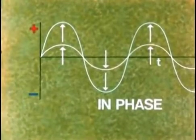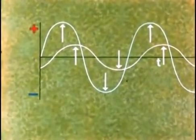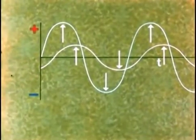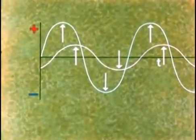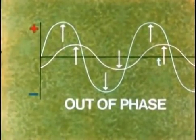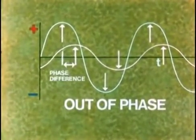Now suppose that one waveform is shifted to the right so that the zero values and peak values no longer occur at the same time. The two AC waveforms are said to be out of phase and the difference between them is called the phase difference.